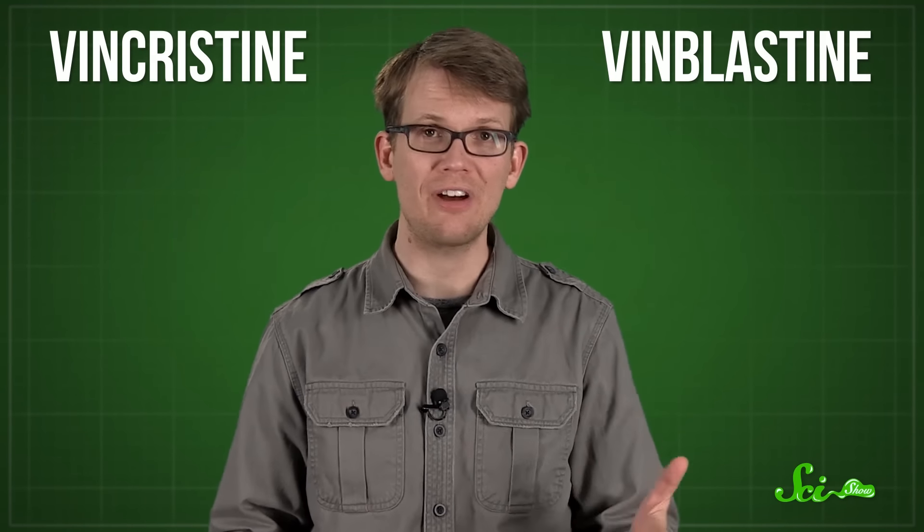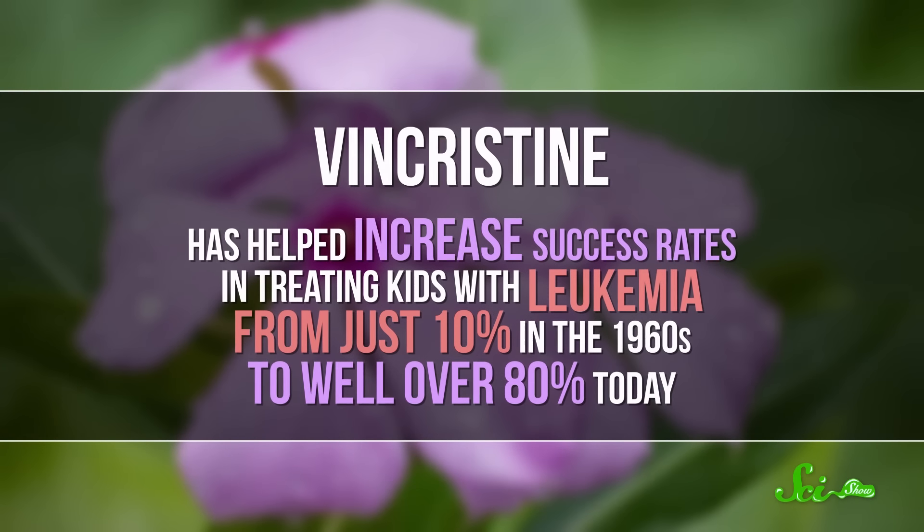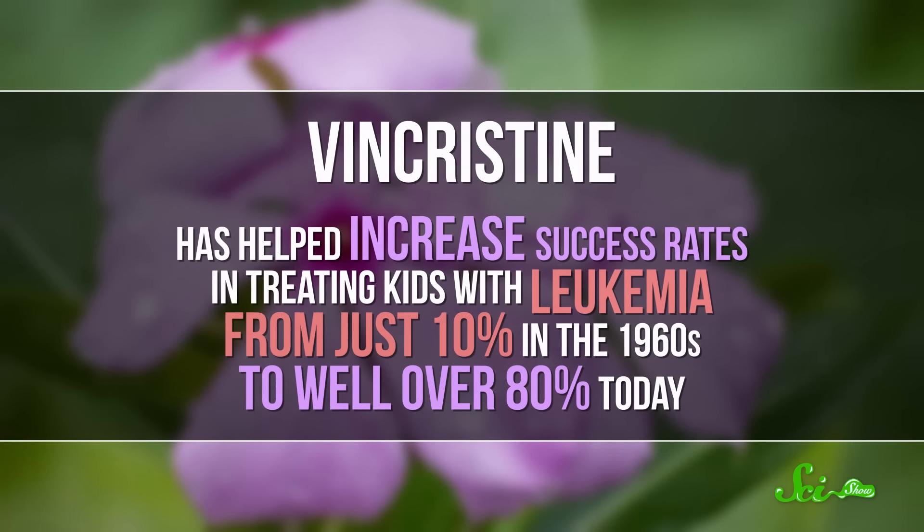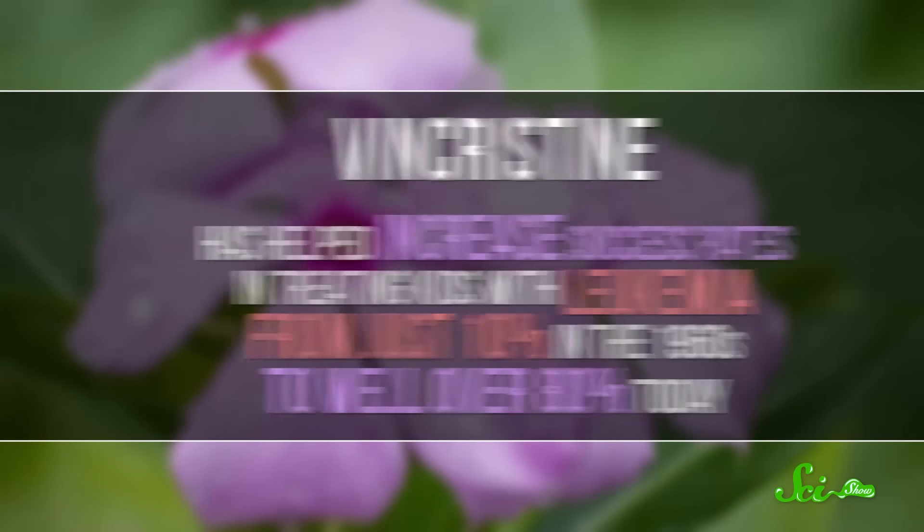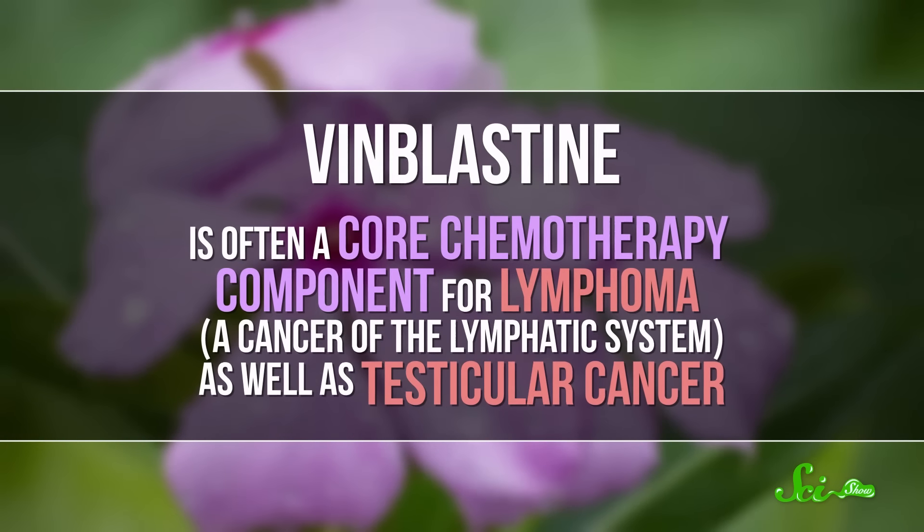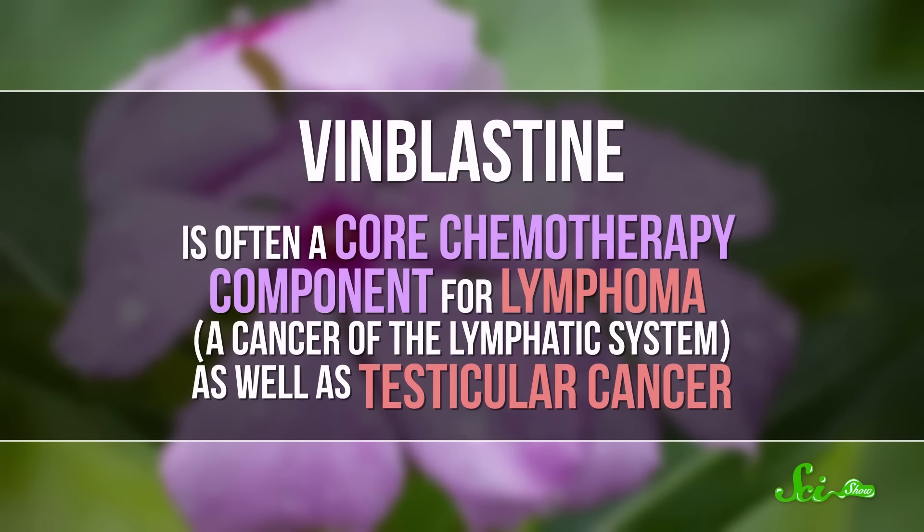Two of these, called vincristine and vinblastine, are used to treat certain types of cancer by stopping the cells from dividing. Vincristine has helped increase success rates in treating kids with leukemia from just 10% in the 1960s to well over 80% today. And vinblastine is often a core chemotherapy component for lymphoma, a cancer of the lymphatic system, as well as testicular cancer.